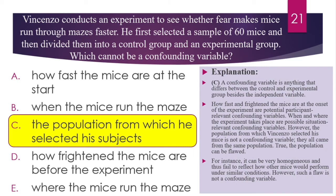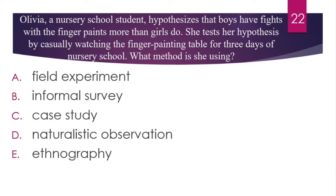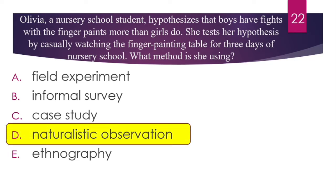Question number 22. Olivia, a nursery school student, hypothesizes that boys have fights with the finger paints more than girls do. She tests her hypothesis by casually watching the finger painting table for 3 days of nursery school. What method is she using? The answer is naturalistic observation — she is observing behavior in a natural setting without any intervention.